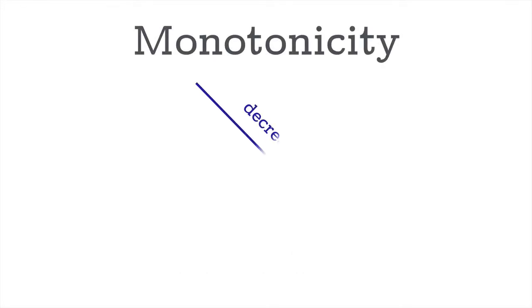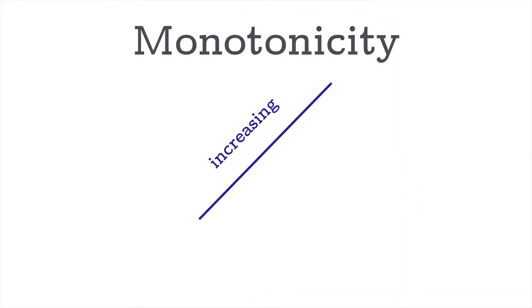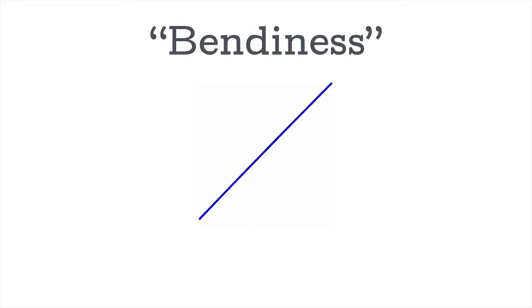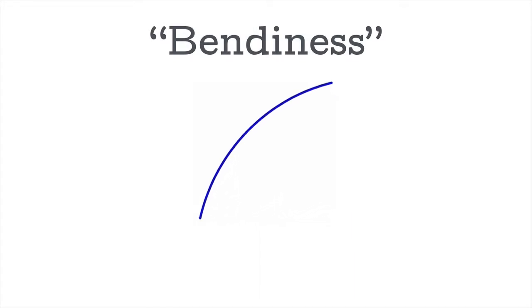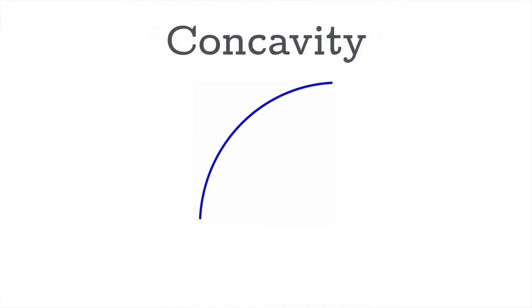Previously we've talked about monotonicity, which is essentially the property of being either decreasing or increasing. In this video, we want to figure out a way to sort of measure bendiness — is there some way of analyzing a function to learn about the way it bends? This property is going to be called concavity.